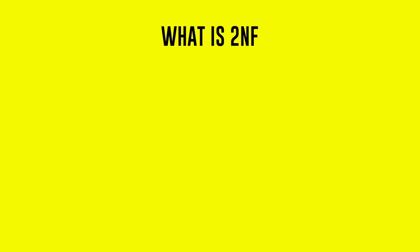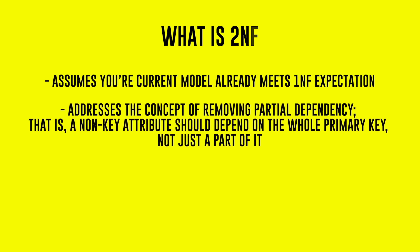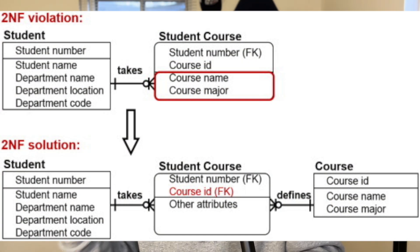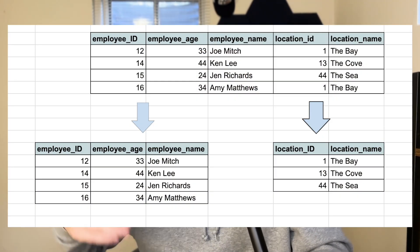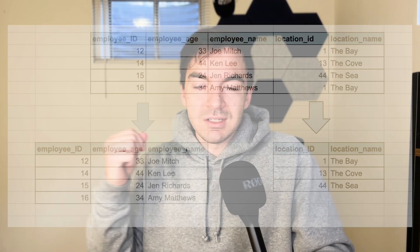Second normal form assumes you're already in first normal form. The goal is that there's no partial dependency on primary keys — values in a table shouldn't only partially relate to the key. An example: if you have employee ID, location ID, and the employee's age in one table, age has a strange dependency. Age should be pulled out into a separate employee entity, and a separate table should track employee-to-location assignments.